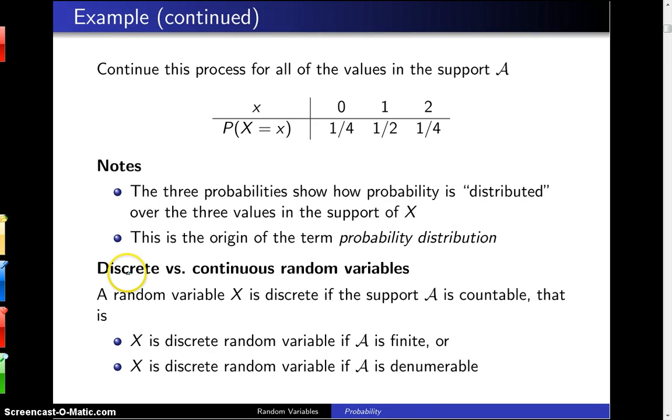How can you tell if you have a discrete or a continuous random variable? A random variable X is discrete if the support script A is countable, and by countable, that means X is a discrete random variable if script A is finite, as it was in this case. There's just three elements in script A, or if X is a discrete random variable, X is a discrete random variable if A is denumerable.